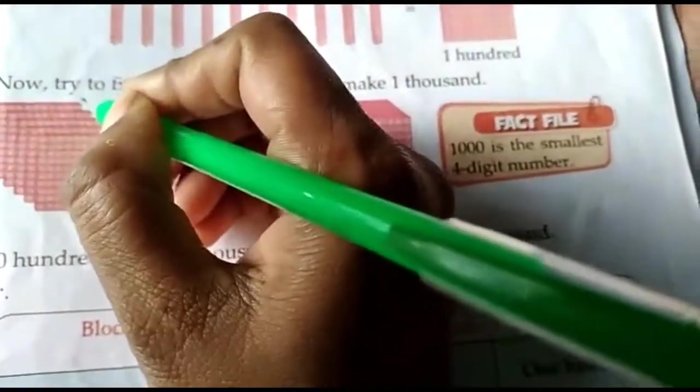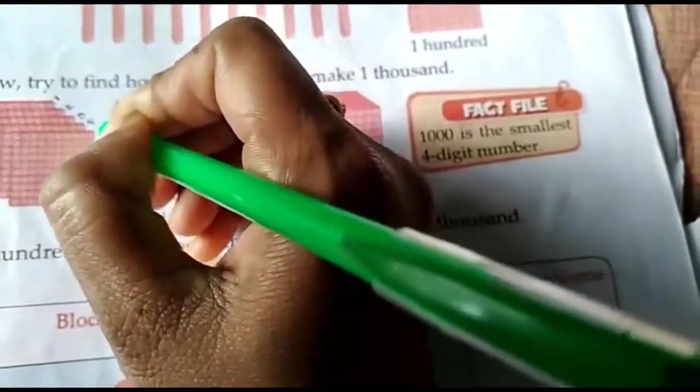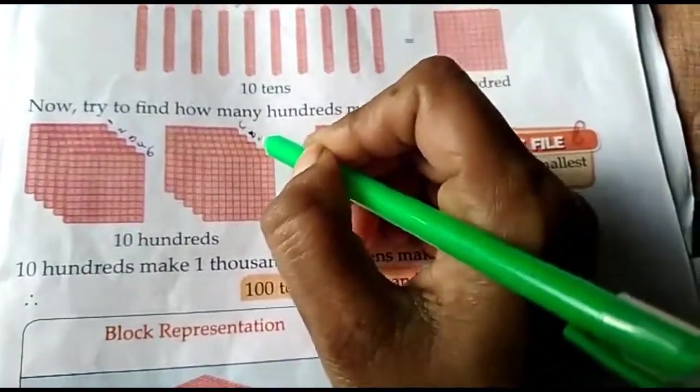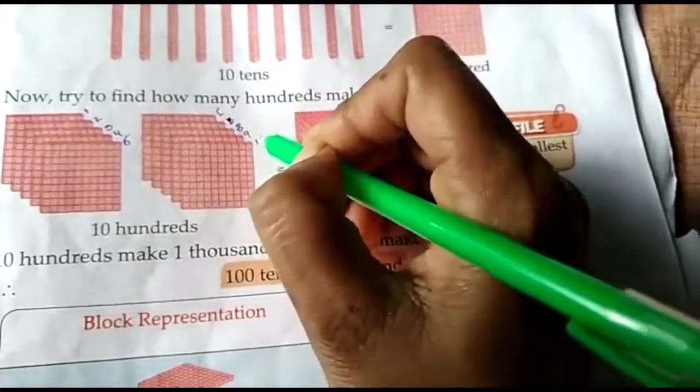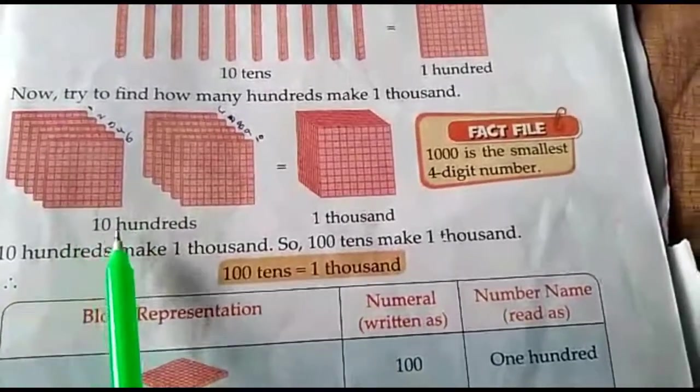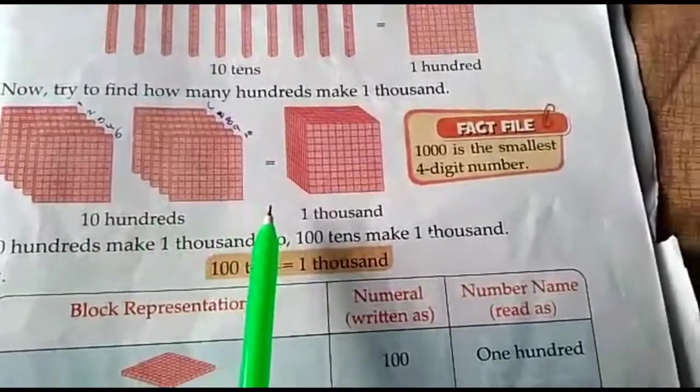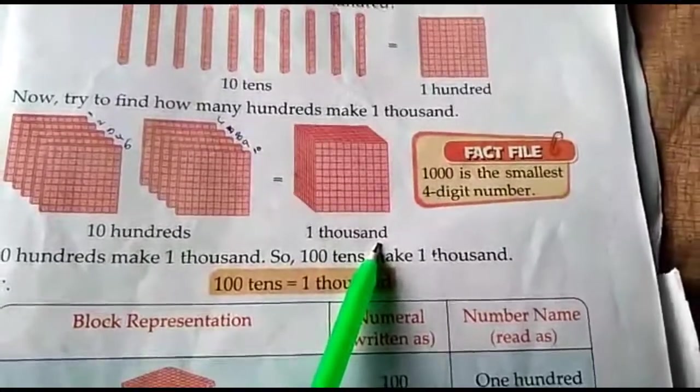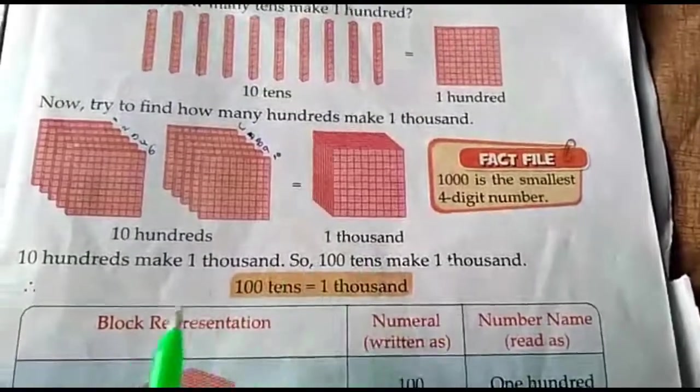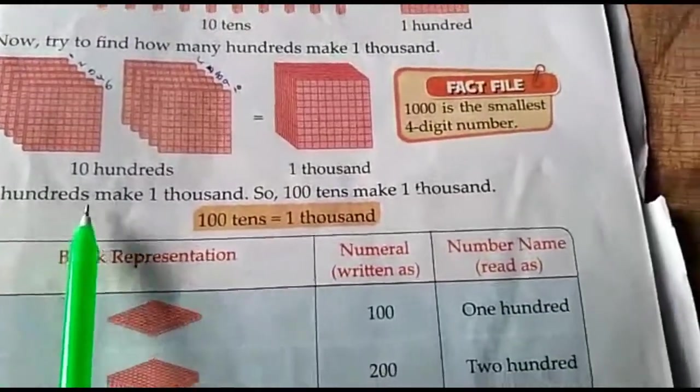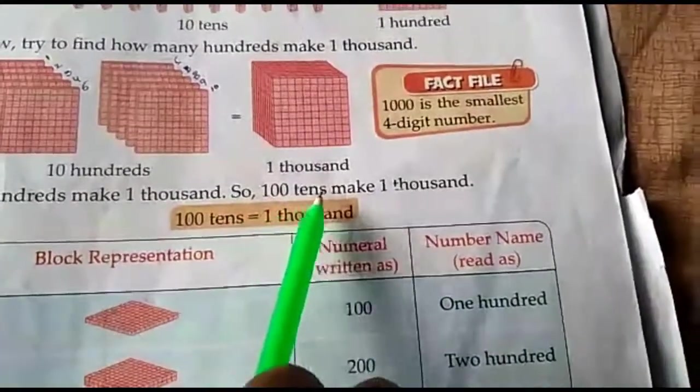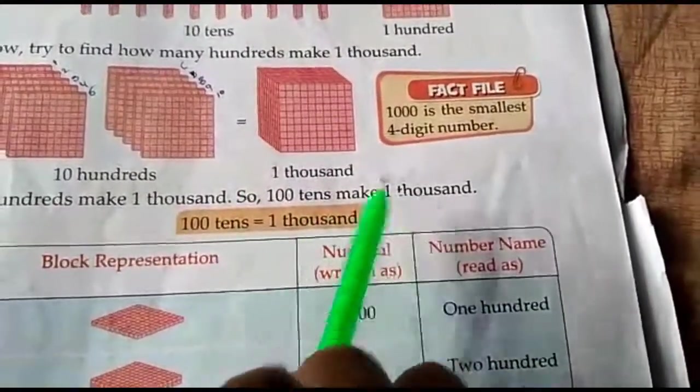One, two, three, four, five, six, seven, eight, nine, ten. So, ten hundred boxes are there. So, ten hundreds are one thousand. So, understand children. Ten hundreds make one thousand. So, hundred tens make one thousand.